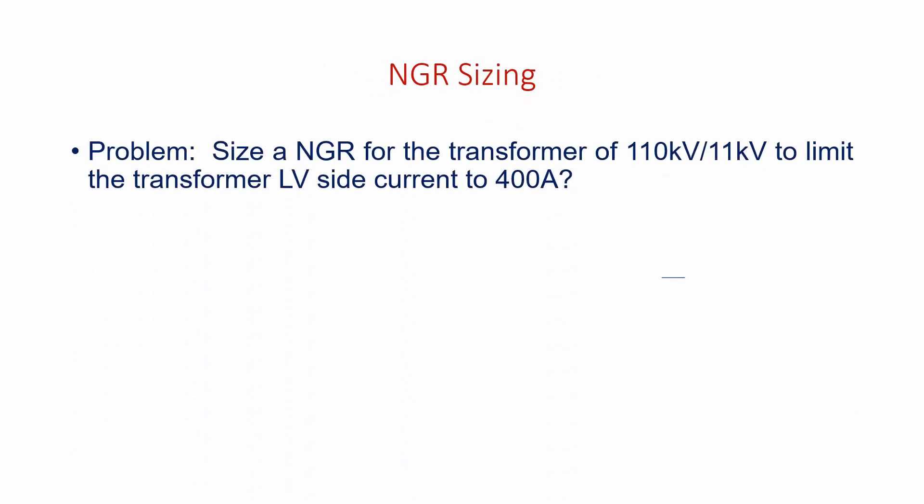Then NGR sizing - how to size NGR? Let's have a simple problem: Size an NGR for a transformer of 110 kV / 11 kV to limit the transformer LV side single line to ground fault current to 400 amps.